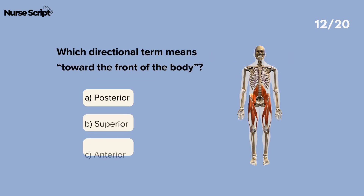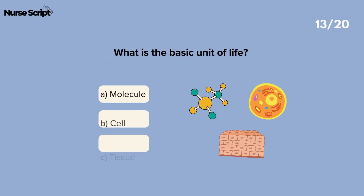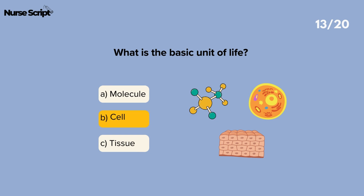Which directional term means toward the front of the body? Anterior. What is the basic unit of life? Cell.